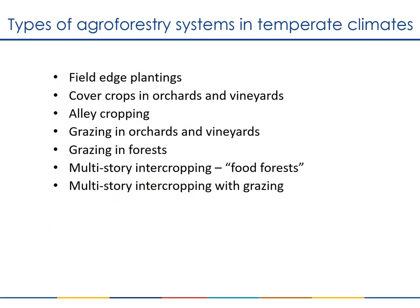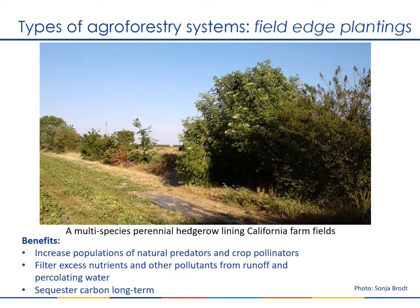Now I'm going to review some of the many different types of agroforestry systems that exist, especially in temperate climates. Field edge plantings — we've already looked at some examples of these, including multiple species native hedgerows. Research results in California have shown that systems like these can significantly increase populations of natural predators as well as pollinators. They have also been shown by many studies to filter excess nutrients and other agricultural pollutants from field runoff as well as water percolating into the soil, and as noted earlier, they can sequester carbon long-term.